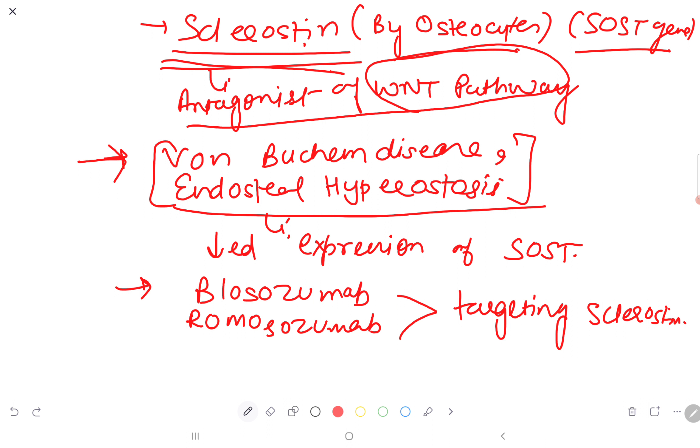Now we will talk about Van Buchem disease and endosteal hyperostosis. Sclerostin causes osteoporosis, and Van Buchem disease and endosteal hyperostosis are diseases in which there is decreased expression of SOST, meaning sclerostin is less in amount, and so we have hyperostosis.